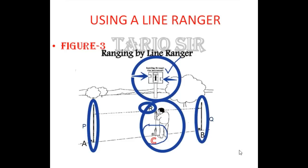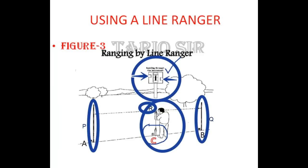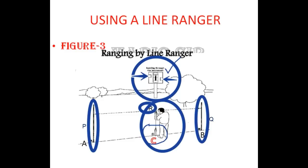The line ranger is a very minor instrument but it is very important and it helps a lot by reducing the need to carry heavy loads. This work can be performed with the help of heavy apparatuses as well, but the line ranger is something that you can carry in your pocket. With it you can easily conduct the ranging at the site.